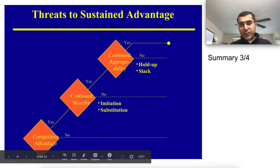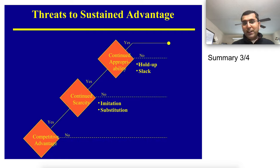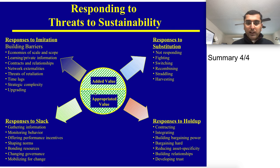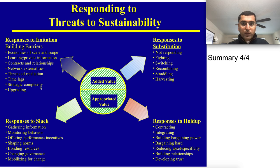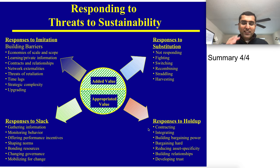If there's scarcity of effort, resources, or others, think about the risks of imitation and substitution — those are the biggest threats once you're successful. Then think about appropriated value: hold-up and slack. If there's no hold-up and slack, you're golden. These steps and the summary slide — available in the description — cover all four threats to sustainability: imitation, substitution, hold-up, and slack, along with barriers and responses. Applying this systematically and making changes in the organization is the most important takeaway.